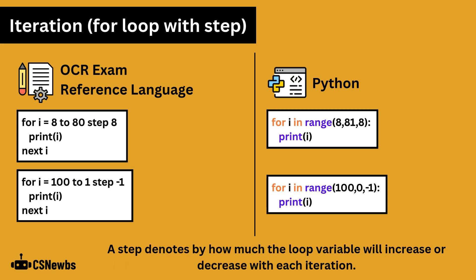A step denotes by how much the loop variable will increase or decrease with each iteration. The step is inclusive in both OCR-ERL and Python. The first example prints the 8 times table, 8, 16, 24, etc. up to 80. The second example prints 100, 99, 98, etc. down to 1.